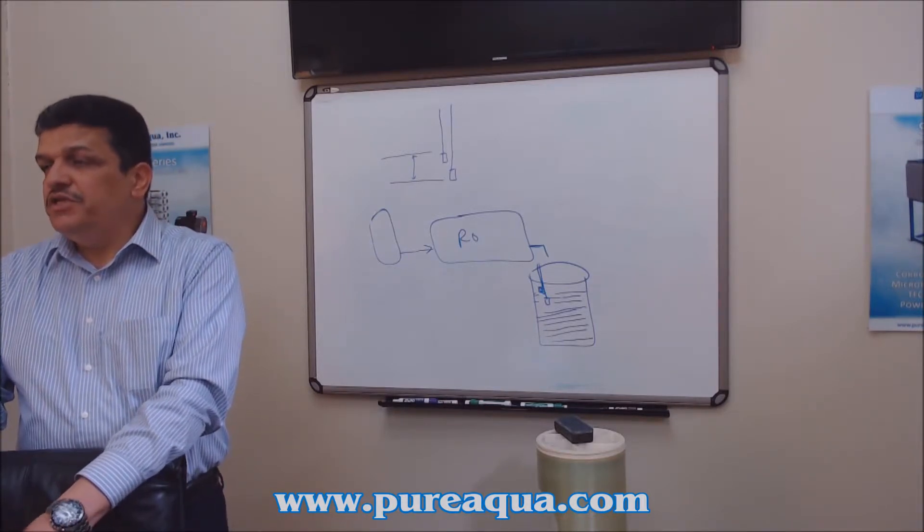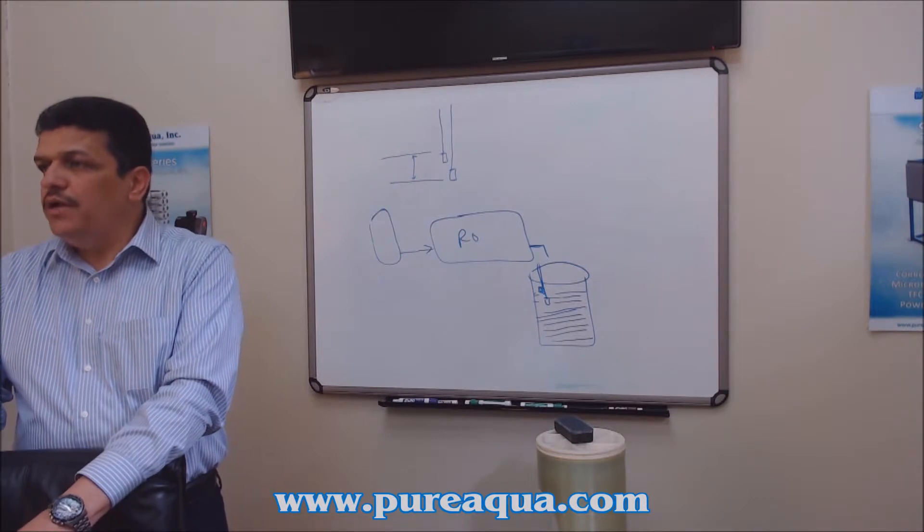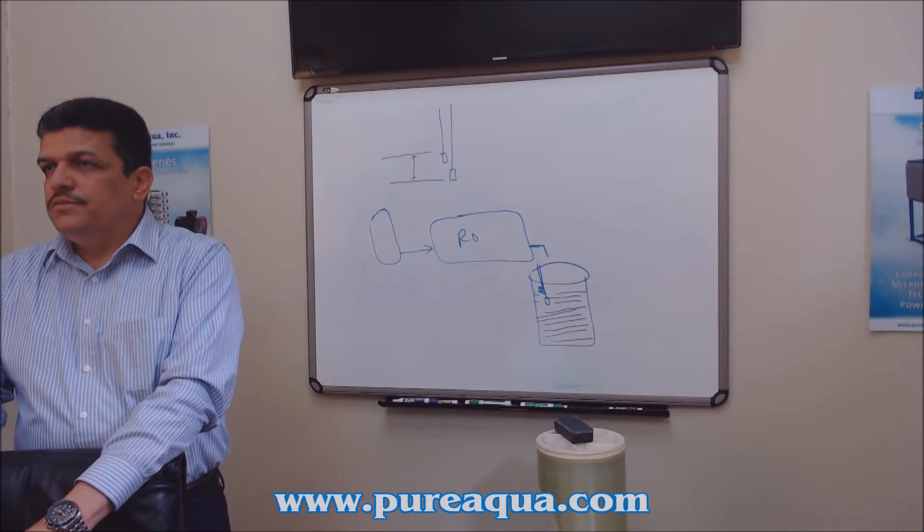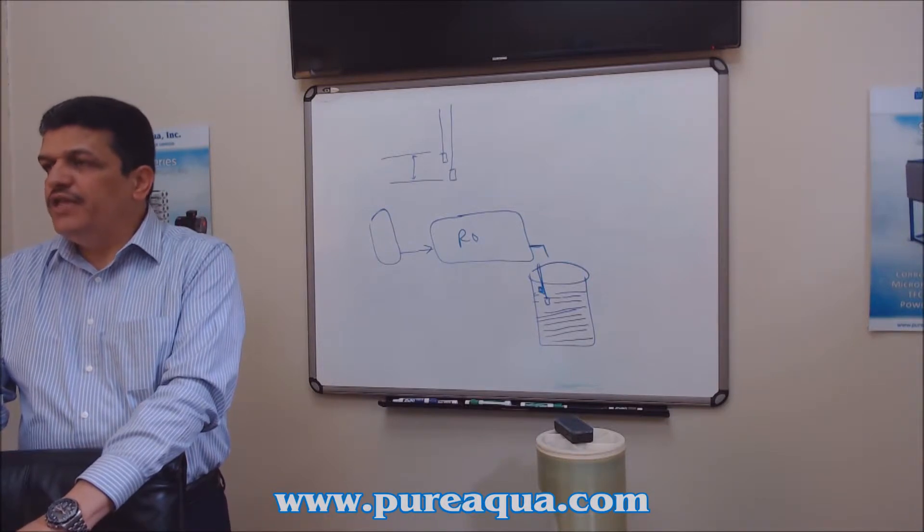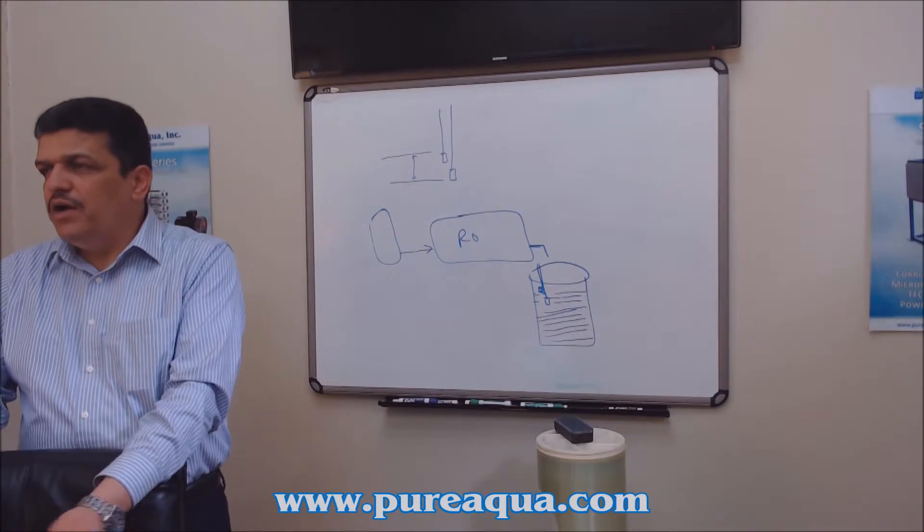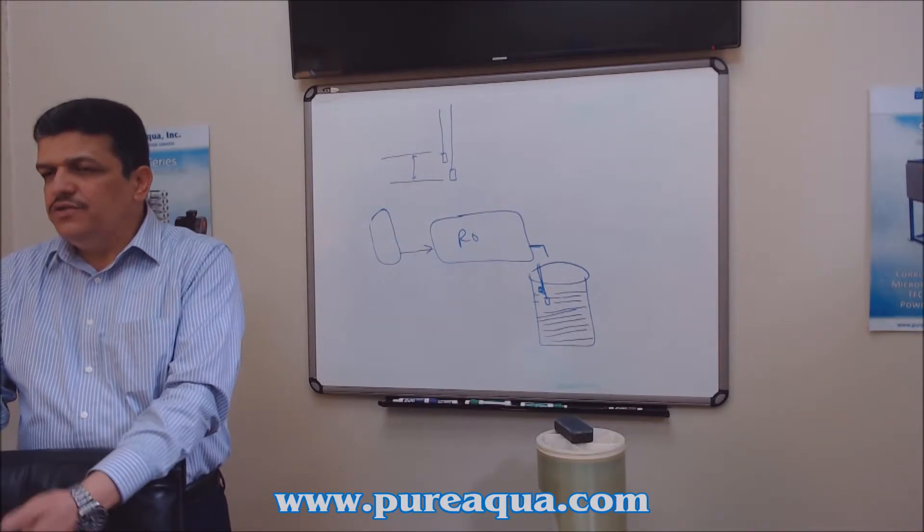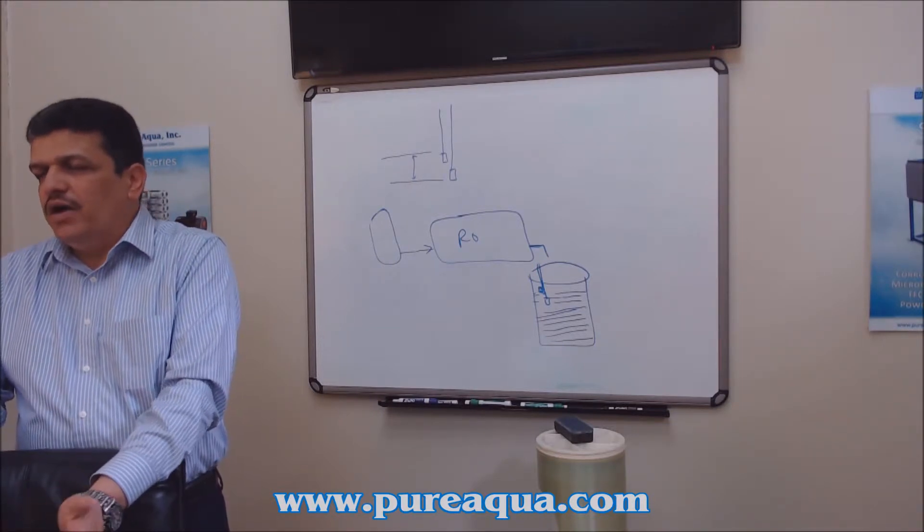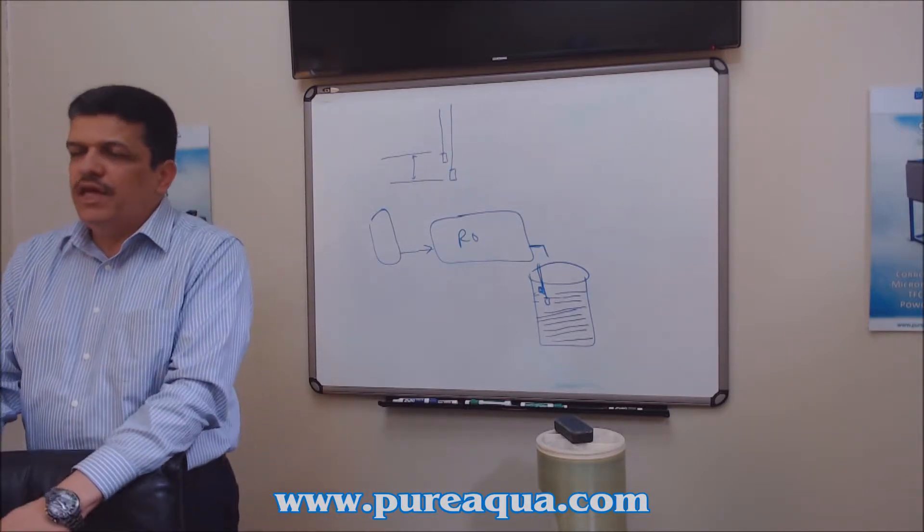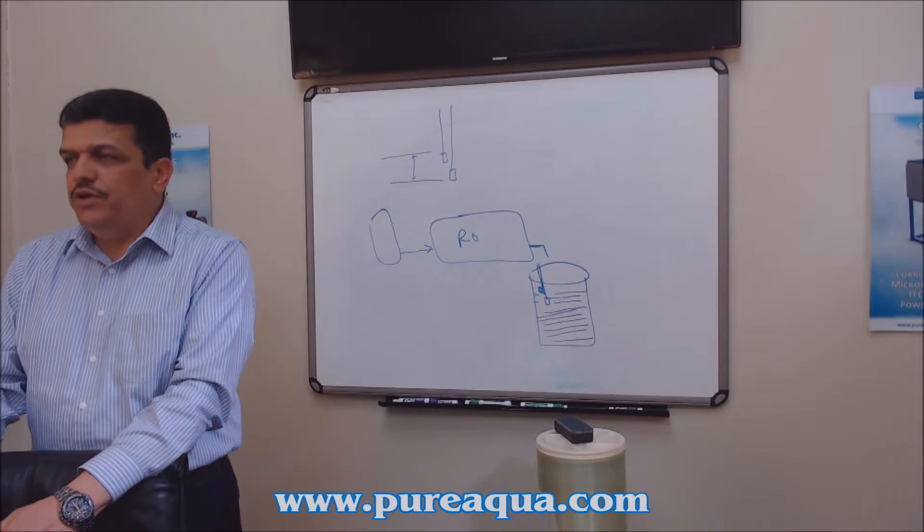So instead of regenerating the resin with sodium chloride, which is salt, people regenerate with potassium chloride. If you use potassium chloride, you can use this water to irrigate the grass or use it as a water fertilizer. It's more expensive, but it depends on the application where you're going to dispose this water.